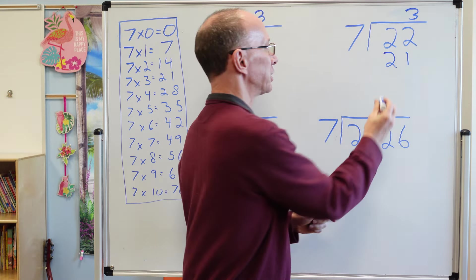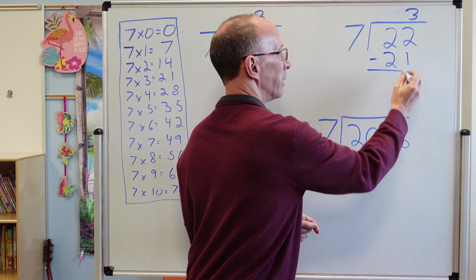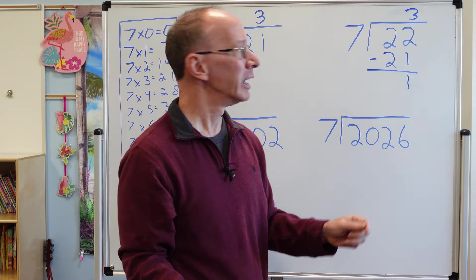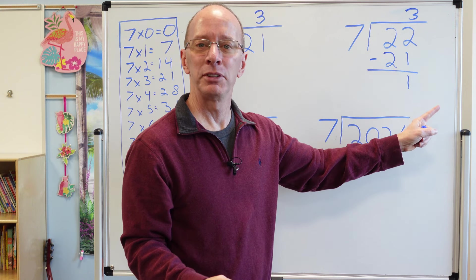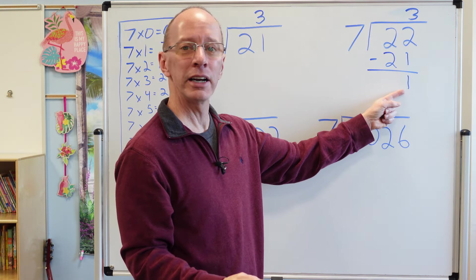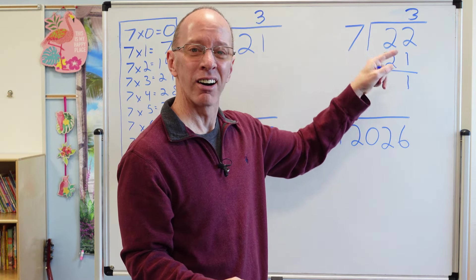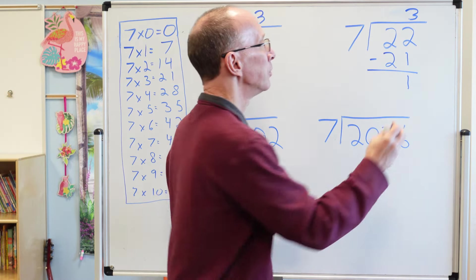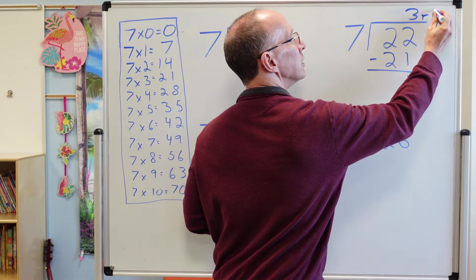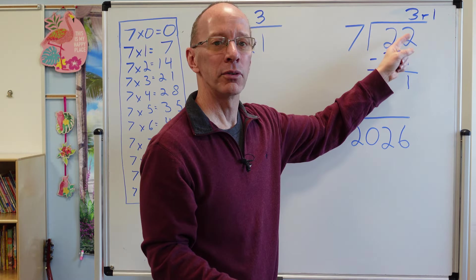There's no more numbers to drop down right here. So this right here is going to be my remainder. So I need to put an R, a small R, and then the one. So I have three remainder one.